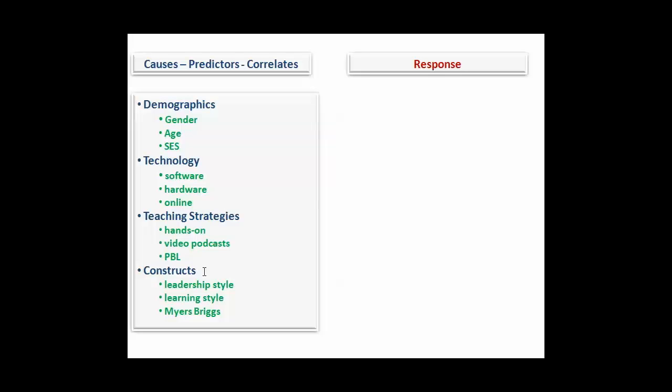The final area is fairly general, and it relates to specific kinds of constructs, like leadership style, learning style, Myers-Briggs, in terms of the kind of person you are, in terms of internal or external motivators, that kind of thing. There are thousands of constructs. You probably need a scale to measure those constructs and see how they may be associated with a specific response.